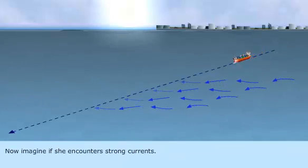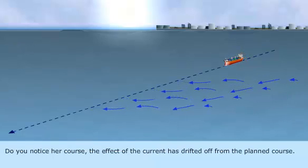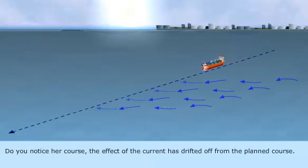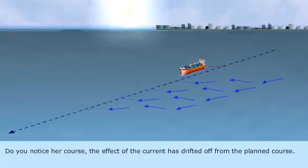Now, imagine if she encounters strong currents. Do you notice her course? The effect of the current has drifted her from the planned course.